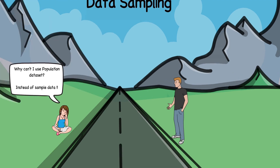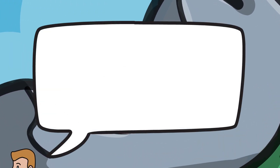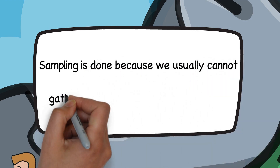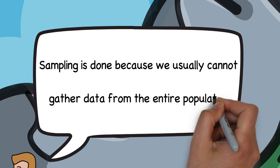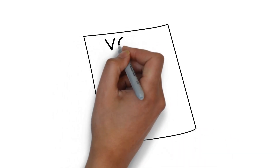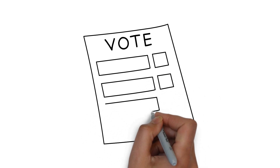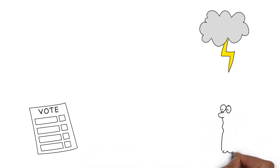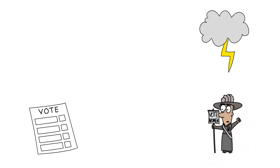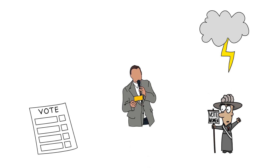So sampling is indeed a tiring process, I agree. But it is the most important part of any data science related project. It is done because we usually cannot gather data from the entire population. If I take an example of an exit poll — which happens just after casting votes during election time — then you must have noticed that media channels target a few people of every age group of the voting population and ask their opinion. This is how an exit poll represents the actual result that we are supposed to get on the result day.